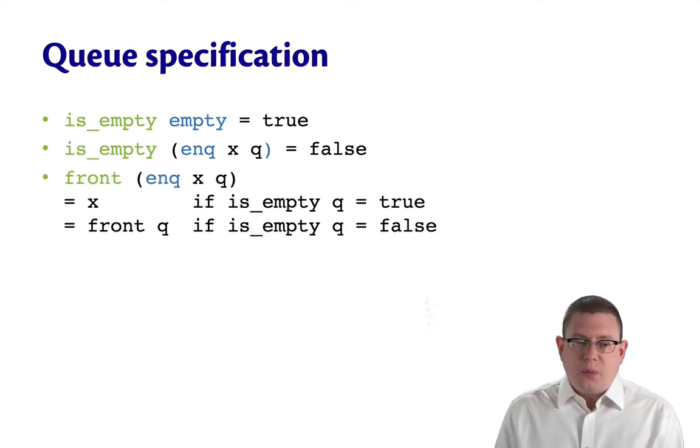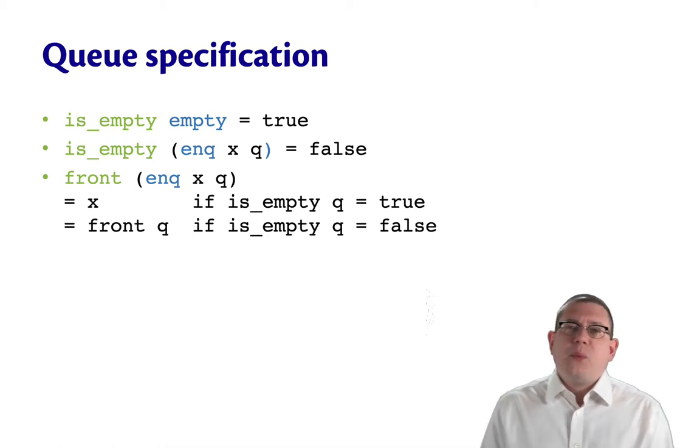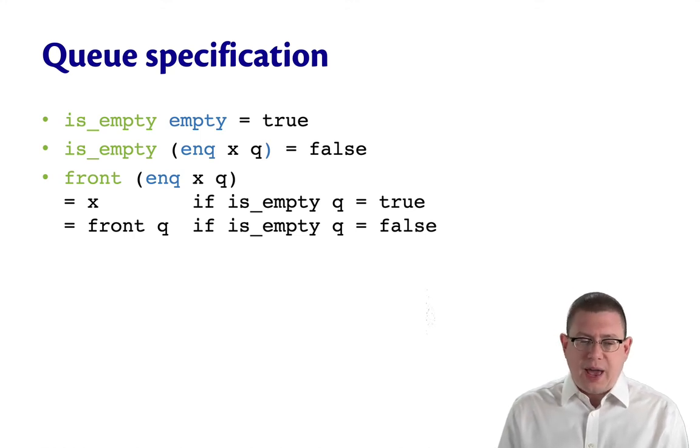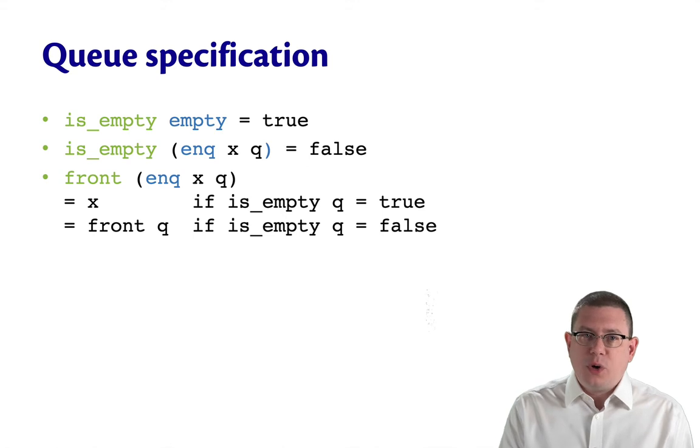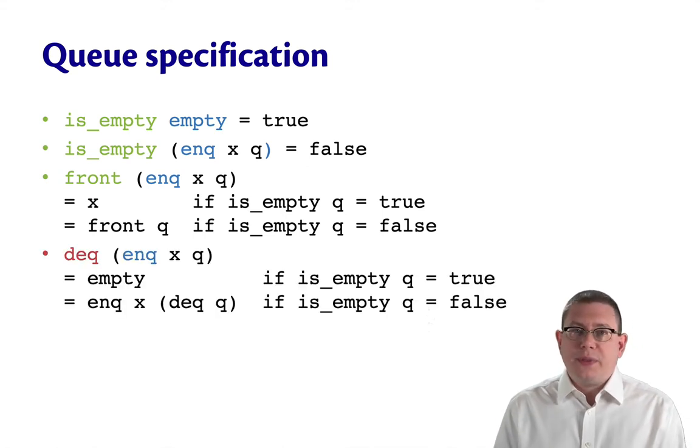As a third equation, how do front and enqueue go together? This is kind of similar to how did peek and push go together for stacks. It's more complicated to write down this equation for queues than it was for stacks, and that's because it depends on whether the queue was already empty or not. We're going to come back and look at this in more detail in just a second. Let me also point out that the same phenomenon is going to occur with the fourth equation. So for stacks, that told us how pop and push interacted. Here it's telling us how dequeue and enqueue interact. And it's, again, more complicated because it's going to depend on whether the queue is empty or not.